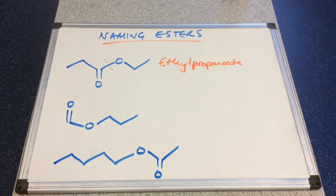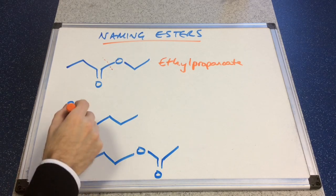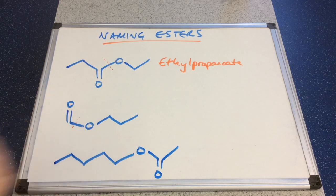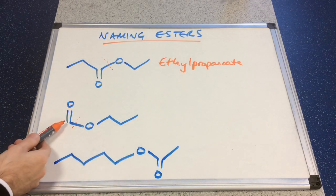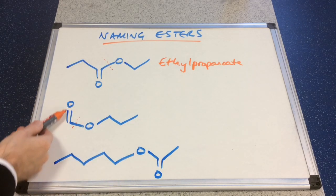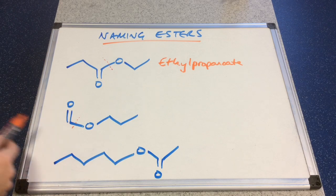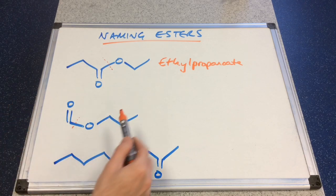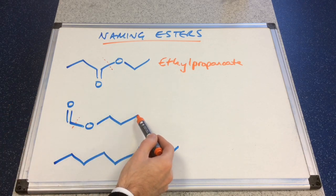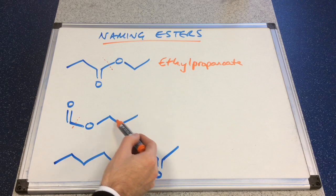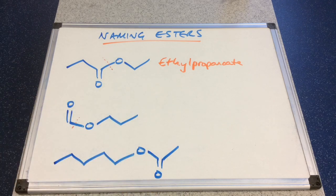We'll do the same for the next one — we'll just do that little dotted line. So we've got just one carbon in this bit, so this is a methanoate group. And then how many carbons in the alkyl part? 1, 2, 3. So this will be called propyl methanoate.